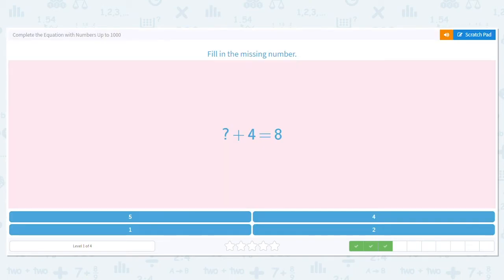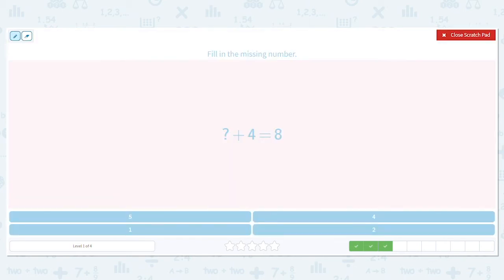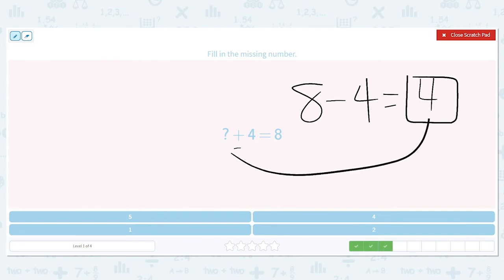Next one. Blank plus 4 equals 8. We use our fact families to help us. So since this is addition, we're going to use subtraction to help us. Working backwards. 8 minus 4 equals what? Or think to yourself, 4 plus what number equals 8? And it's 4, which means the 4 goes here. Is 4 plus 4, 8? Yes, it is. Good job.